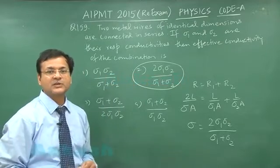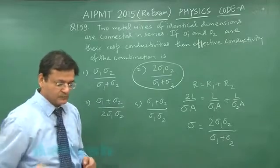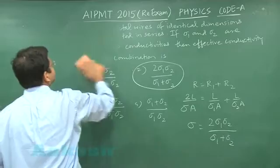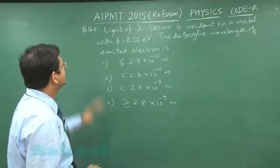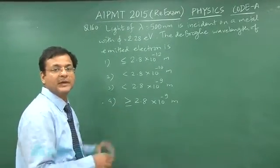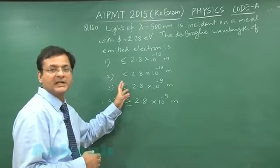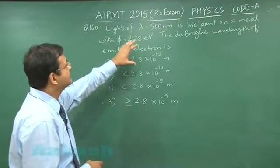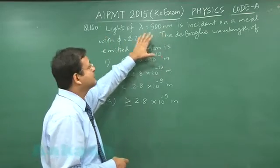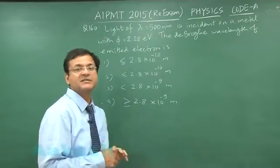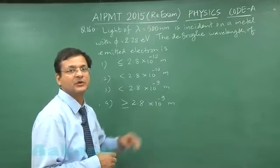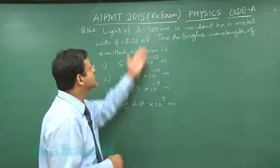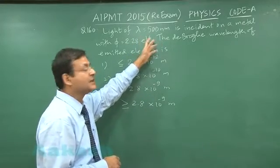Switch over to next question 160. Now in this question which is based on dual nature you have to make use of 2 equations, one of photoelectric effect and that of de Broglie hypothesis. It says that light of wavelength 500 nanometer. Now see 500 nanometer has a standard energy value approximately 2.46 electron volt because you have 1.23 electron volt equivalent to 10000 angstrom. So this is 5000 angstrom approximately 500 nanometer.